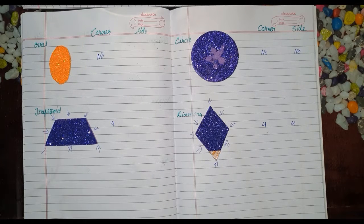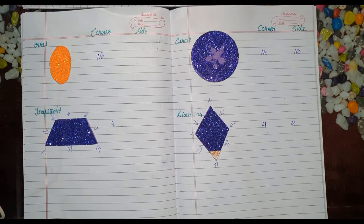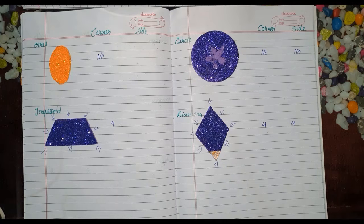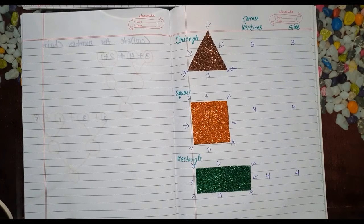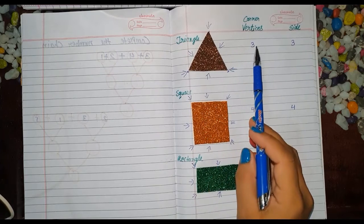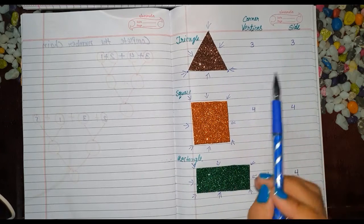So children, we have learned shapes, corners, and sides. Vertices are the corners or points of a shape. Sides are the straight lines that connect the corners. A triangle has three corners and three sides.